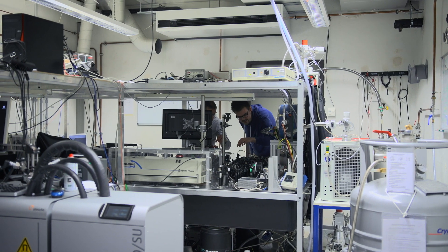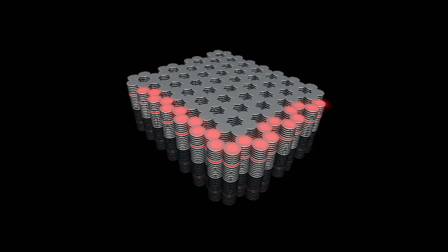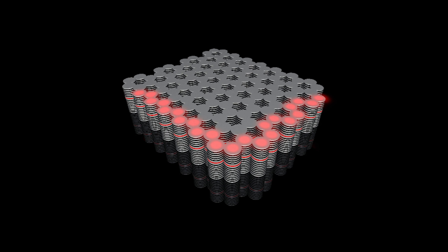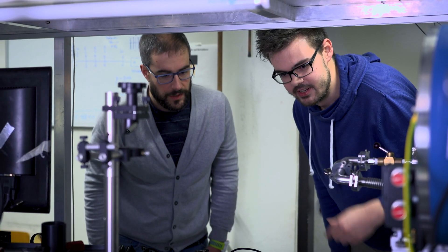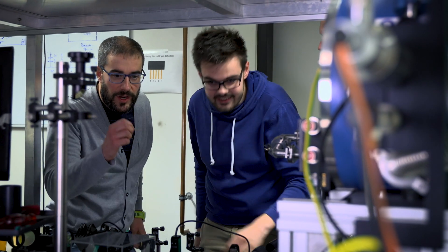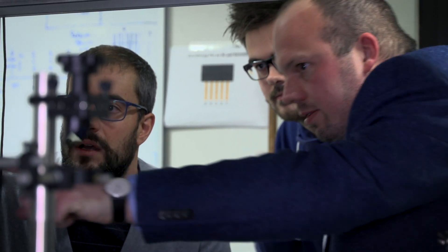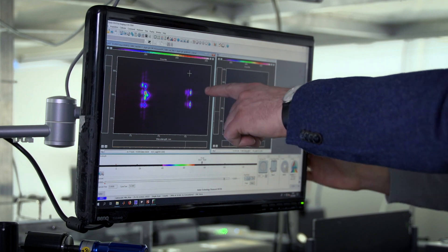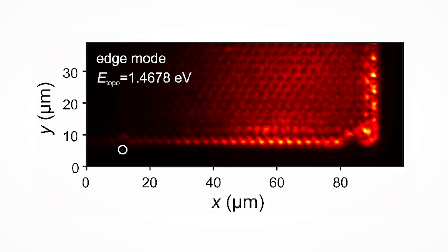My research focus within CT-QMAT is essentially to bring concepts of topological protection to photonic systems. We have realized the first topological insulator for hybrid-light metaparticles, so-called exciton polaritons. By arranging them in a graphene-like lattice and applying effective spin-orbit interaction and magnetic field, we have been able to open a topological gap. What we essentially observe is topologically protected unidirectional edge transport of polaritons.